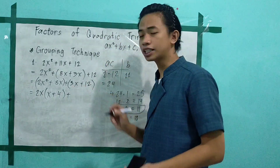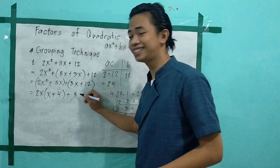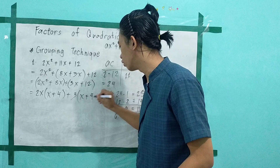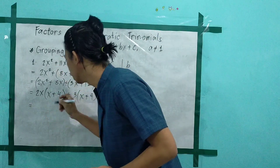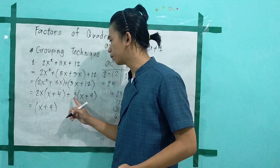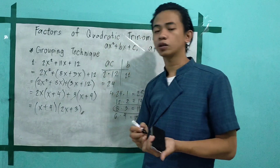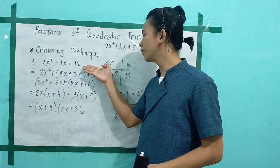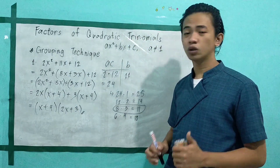For the second group, 3x plus 12 has a common monomial factor of 3. So 3x divided by 3 is x, and 12 divided by 3 is 4. Notice that the expressions inside both parentheses are the same — (x plus 4). Copy that as the common factor. The factors outside the parentheses are 2x and 3, giving (2x plus 3). Therefore, the factors of 2x squared plus 11x plus 12 are (x plus 4)(2x plus 3).